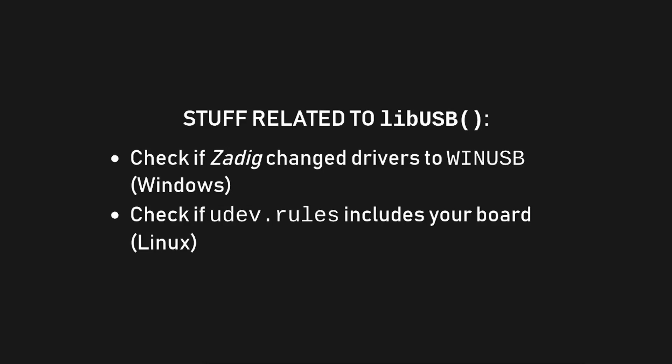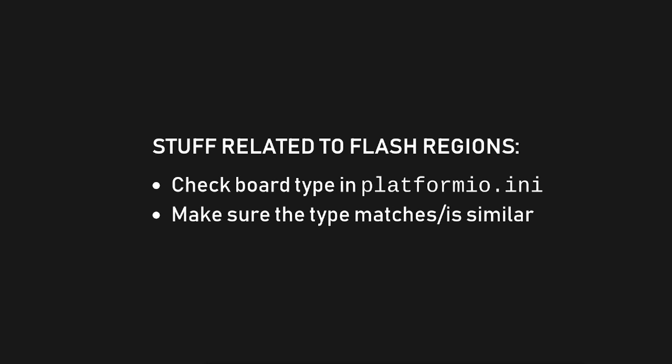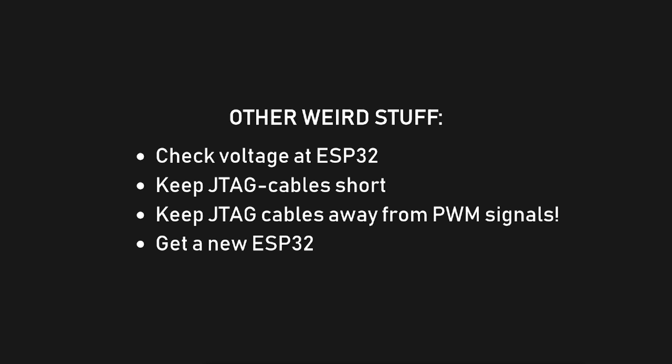Let's talk about some possible errors you might face. Stuff related to libUSB: this is a driver issue — be sure that Zadig overrode the default drivers with WinUSB on Windows, or that your udev.rules file lists the ESP-PROG. As of now, installing these drivers on an ARM device with Windows 11 does not work. If it still doesn't work, reboot your PC and check again. Stuff related to flash regions: be sure that you selected the right board — there are many and some names are confusing, so look them up on the platform.io website. For other weird issues, ensure all power connections are stable and all cables are short and far away from cables driving motors, LEDs, or active buses. The hard pill to swallow is that more ESPs arrive dysfunctional than you'd think — consider buying them in larger quantities to avoid being stuck with one defective ESP32.